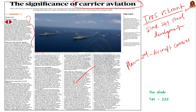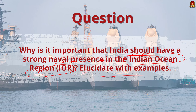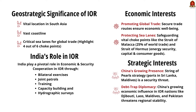The main question related to security is: why is it important that India should have a strong naval presence in the Indian Ocean region? The Indian Ocean region is an important strategic area with unique characteristics like vital geographic locations in South Asia, a vast landmass jutting into the Indian Ocean, and critical sea lanes essential for communication. India is in a pole position to play an important economic and security role in the region, exercising influence through bilateral exercises, joint patrols, trainings, capacity building, and hydrographic services.